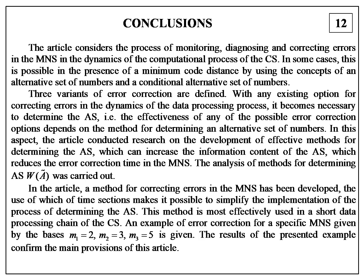The analysis of methods for determining alternative sets was carried out. Methods for correcting errors in the modular number system have been developed, the use of which in time sections makes it possible to simplify the implementation of the process of determining the alternative set. This method is most effectively used in a short data processing chain of the computer system. An example of error correction of a specific modular system is given, and the result confirms the main findings of this article.